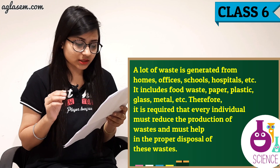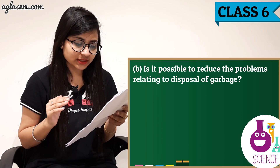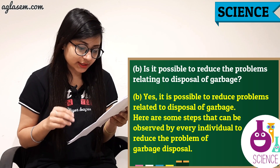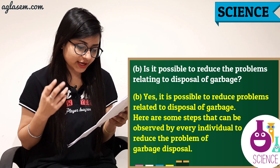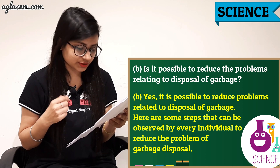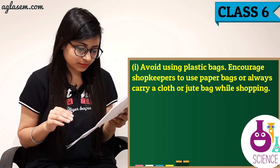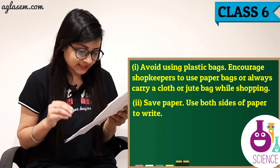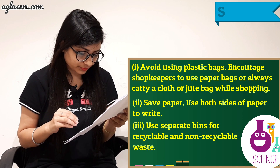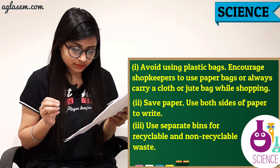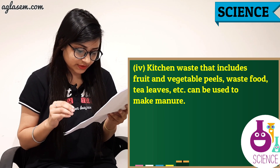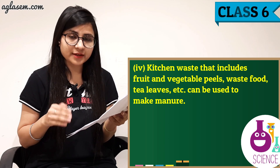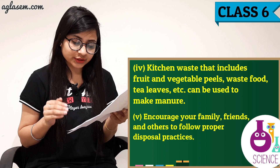Question 2b: Is it possible to reduce problems relating to disposal of garbage? Yes, it is possible. Steps every individual can follow: first, avoid using plastic bags and encourage shopkeepers to use paper bags, or always carry a cloth or jute bag while shopping. Second, save paper and use both sides to write. Third, use separate bins for recyclable and non-recyclable waste. Fourth, kitchen waste such as fruit and vegetable peels, waste food, and tea leaves can be used to make manure. Fifth, encourage family and friends to follow proper disposal practices.